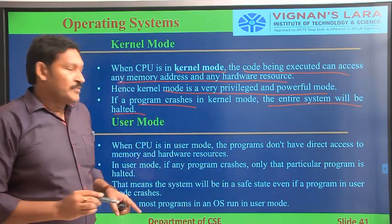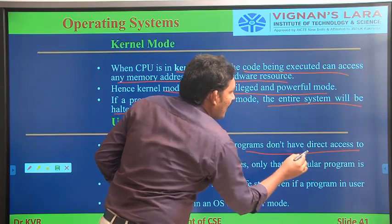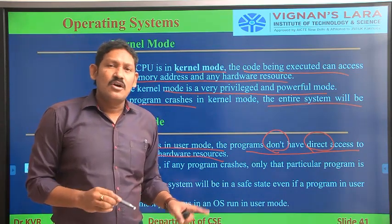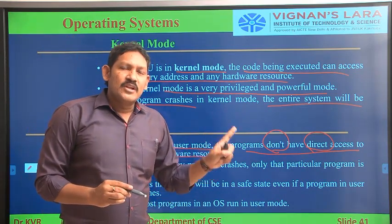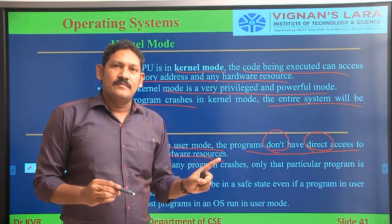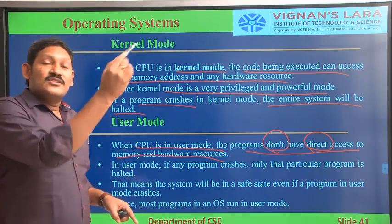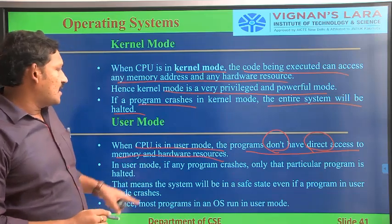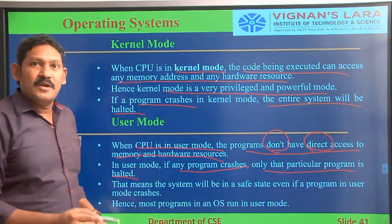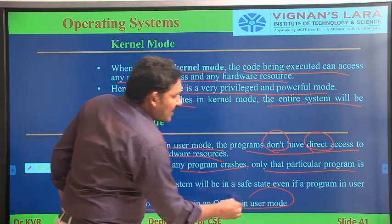In user mode, when the CPU is in user mode, the programs don't have direct access to the memory or resources. If the CPU is executing any program in user mode, it will not have direct access to resources or memory locations. It will keep a request to the kernel mode. If any program crashes, only that particular program is halted; the remaining programs will be as usual. That is the advantage of user mode and the reason why most of the operating systems run in user mode.